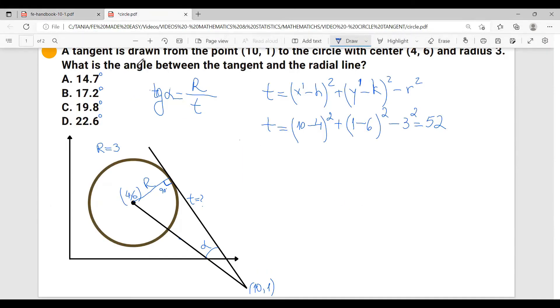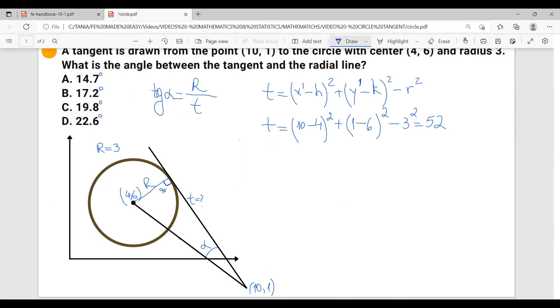So the tangent equals to 52. Okay, so the formula says tangent squared equals to 52. So now tangent will equal to square root of 52. And this means tangent equals to 7.21.